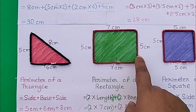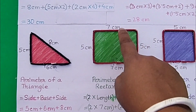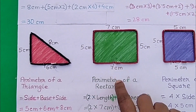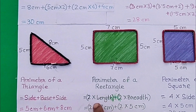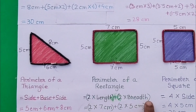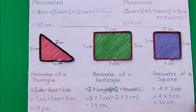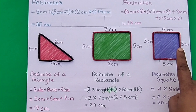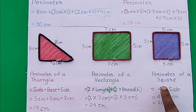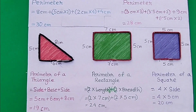In a rectangle, two opposite sides are equal. The longer sides are called length and the shorter sides are called breadth. The perimeter of a rectangle is two times length plus two times breadth. A square has four equal sides, so the perimeter of a square is four times the side.